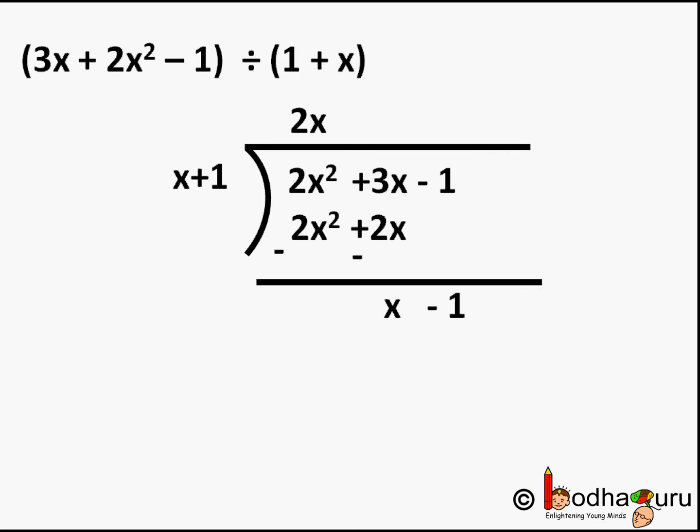So now subtract each term below each term. So 2x² - 2x² is equal to 0, plus 3x - 2x equal to x. Now rest of the dividend, -1, comes down. So now x - 1 is the new dividend.